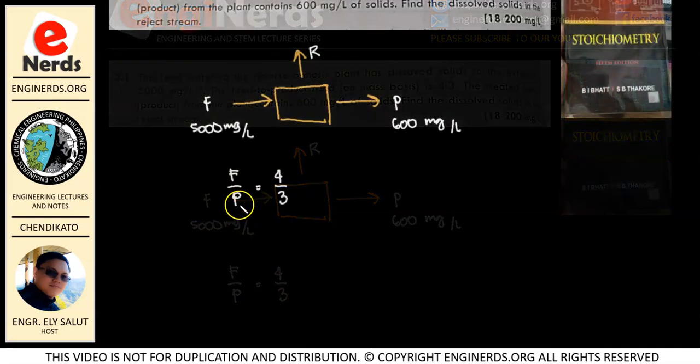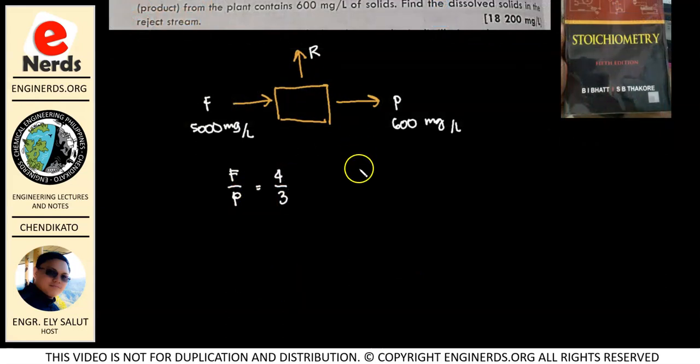Okay, so allow me to present P as a function of F. So that means from this relationship, we have P is equal to 3F over 4. So we just transpose our given to isolate P. Okay, so based on our illustration, we can get our overall material balance. So let me write that here. We have overall material balance. So we have F is equal to R plus P, right?